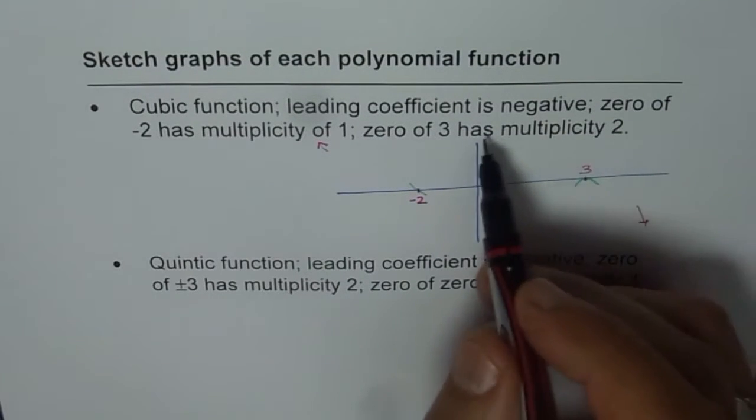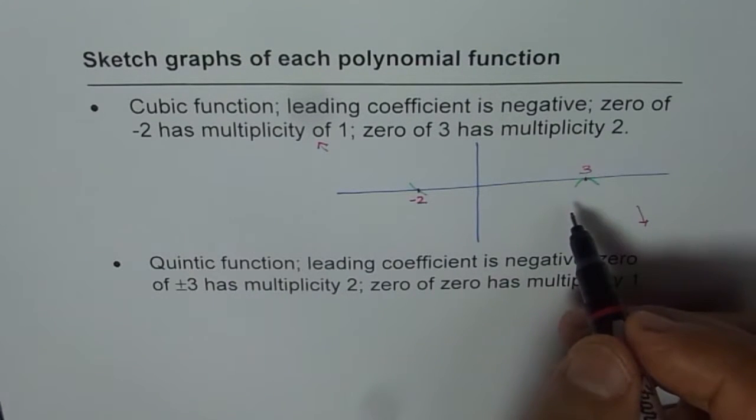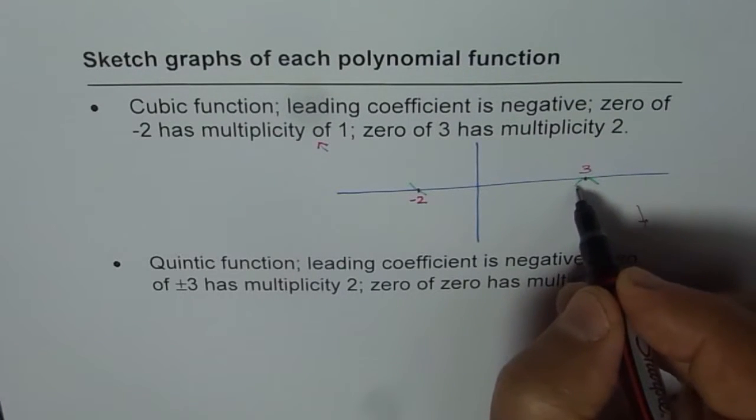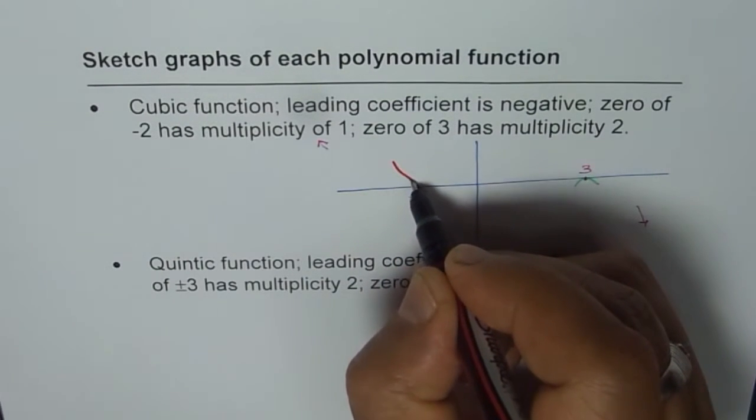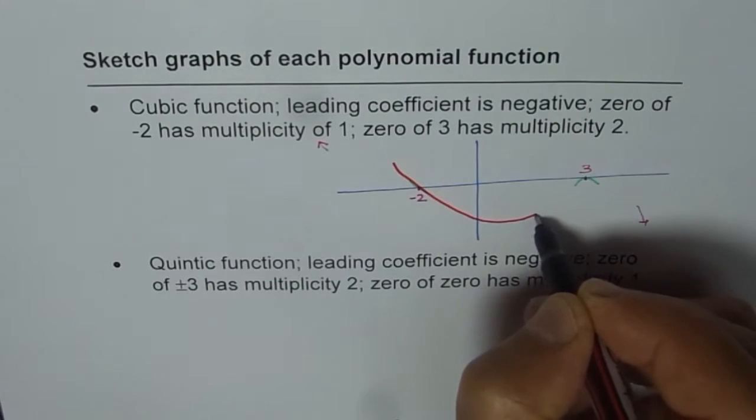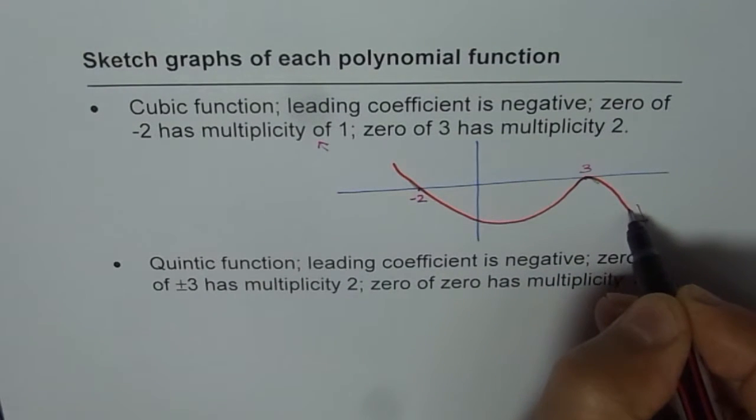Y-intercept is not given to us in this particular question, so we will not really bother about it. There could be many functions which will meet this criteria. So what we will do is, we can actually start from anywhere. Let's go from left to right. So it's a line which comes like this, a smooth curve,